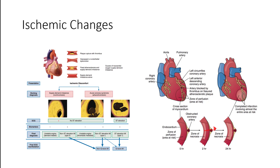We might see T-wave inversion. When we start getting into infarction and cell death, we'll start seeing ST elevation, as well as probably still some T-wave inversion. This is because of the disruption to the membrane potentials due to inadequate blood flow caused by a blockage somewhere in the coronary artery.